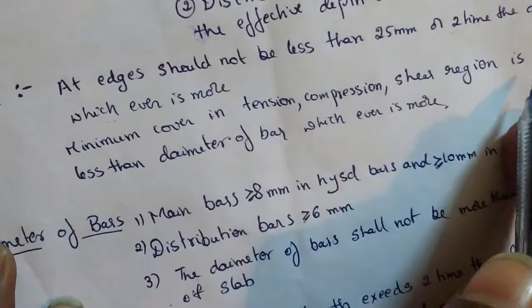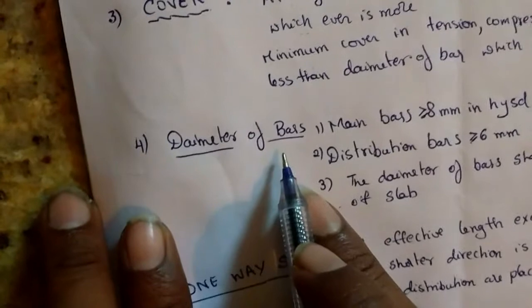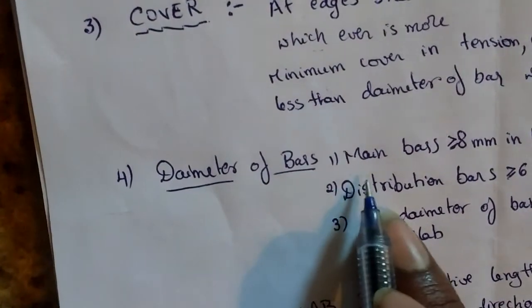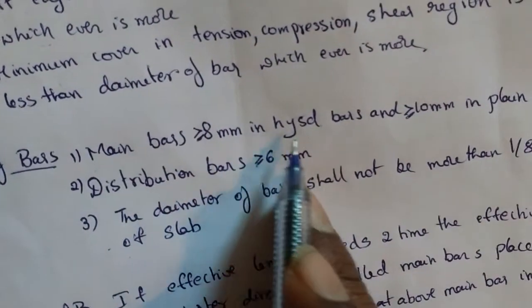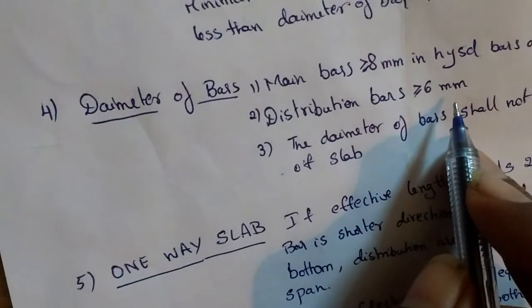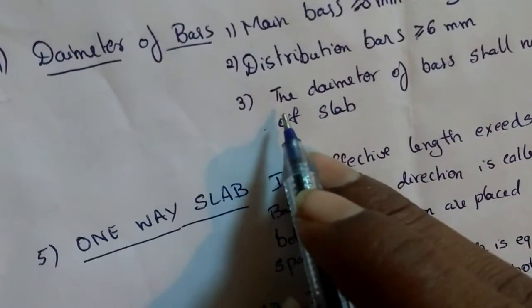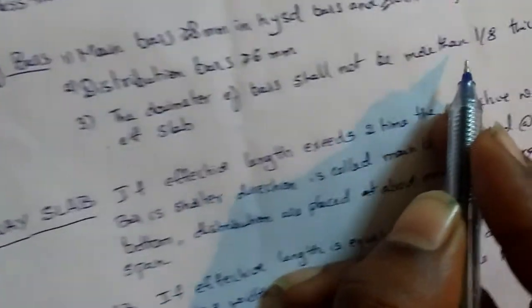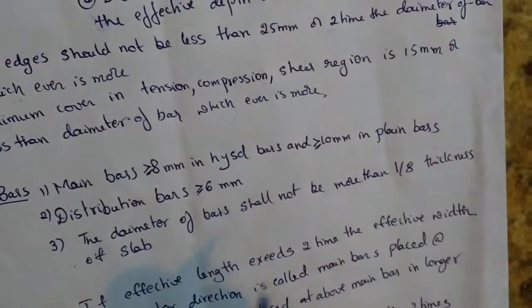Minimum bar diameter: main bars should be more than 8 mm for HYSD bars and 10 mm for plain bars. Distribution bars should be more than 6 mm. The diameter of the bar shall not be more than one-eighth of the thickness of the slab — that is the maximum diameter you can use.